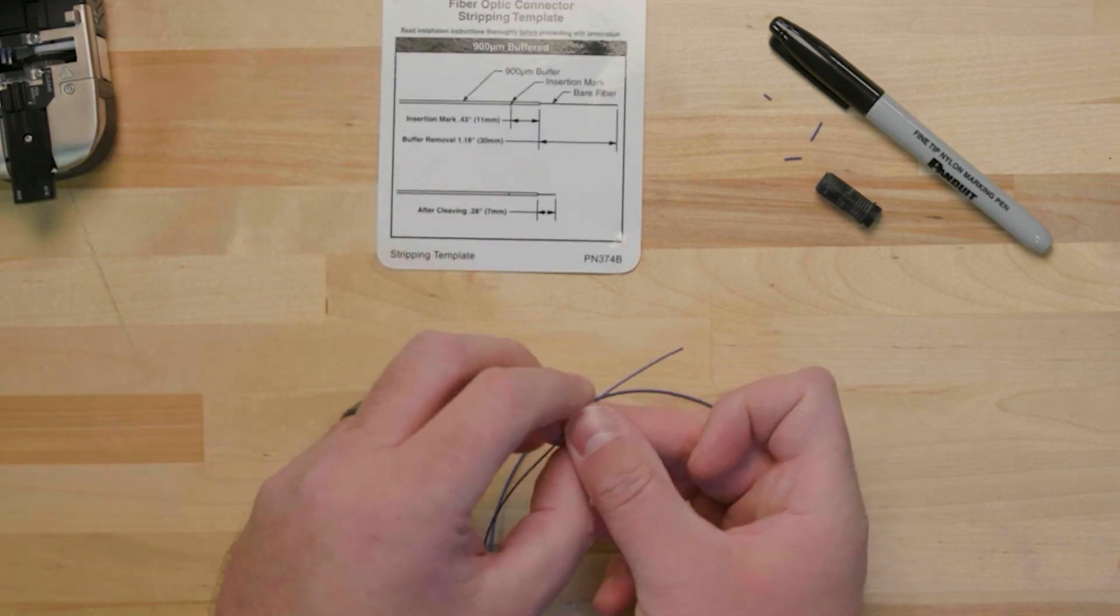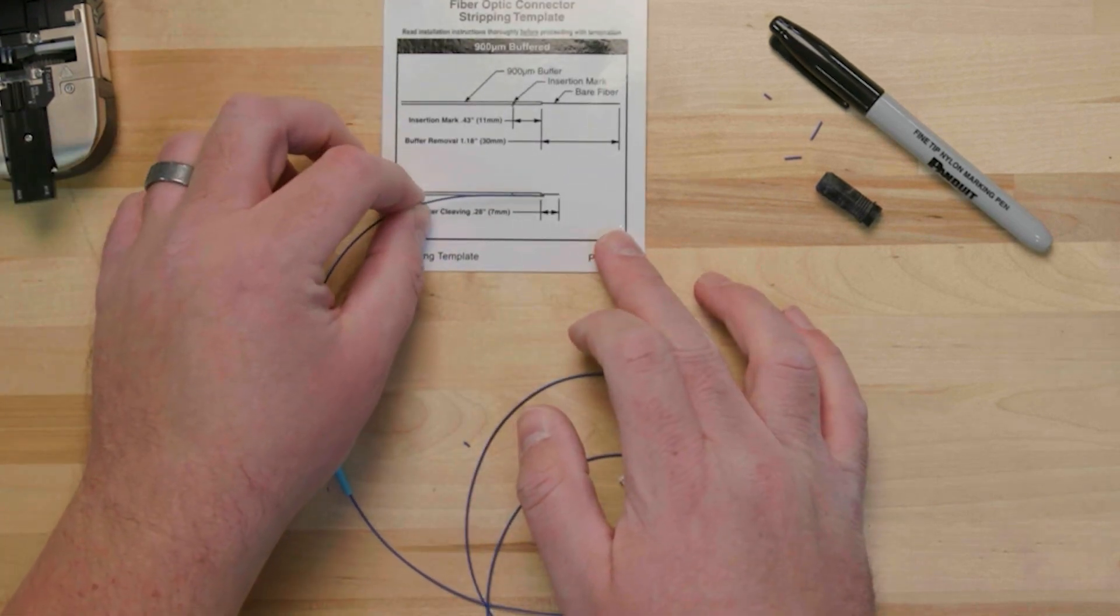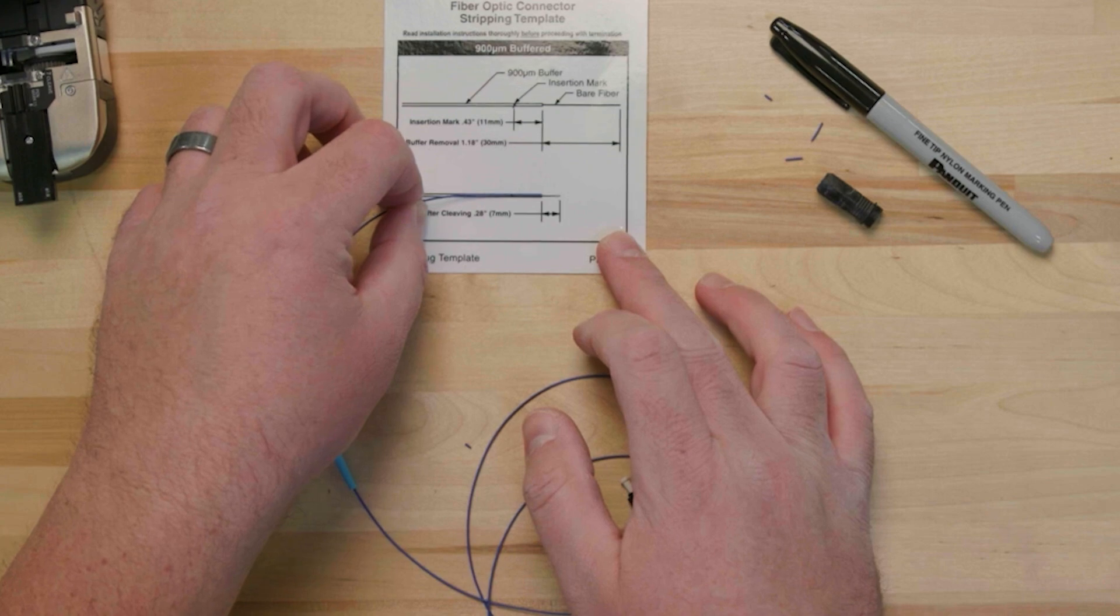Once the fiber has been cleaved, use the SC stripping template card to verify that the fiber is 7 millimeters long.